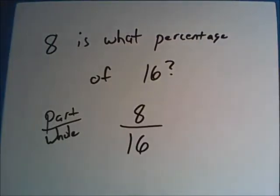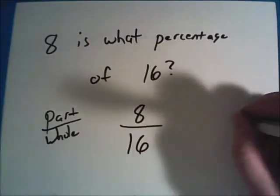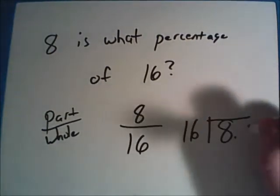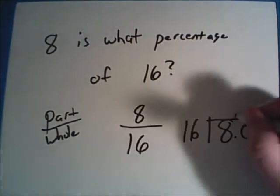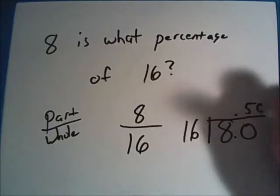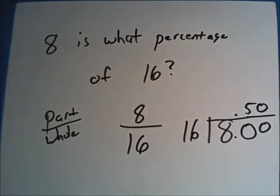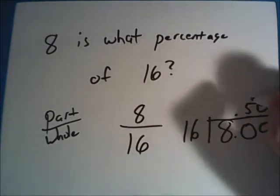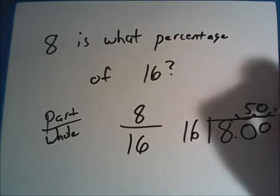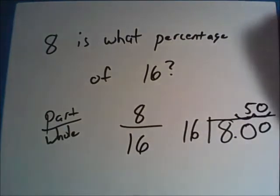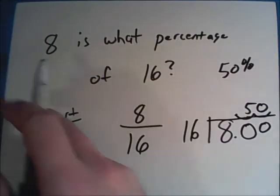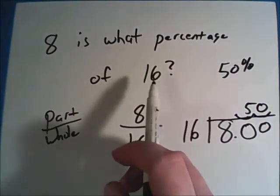And remember from the fractions section that fractions are the same thing as dividing. So do 8 divided by 16. You should get 0.5 or 0.50. Once you've got this decimal, move your decimal point two places to the right to make it a percentage. So this turns into 50%. So 8 is 50% of 16.